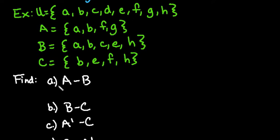So we're going to find several different situations. The first one is A minus B. So what we're going to do is look at A, which has the letters A, B, F, and G, and we're going to take out any that they have in common.